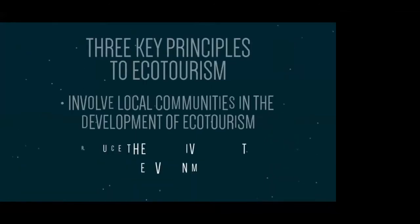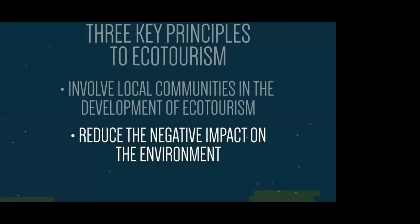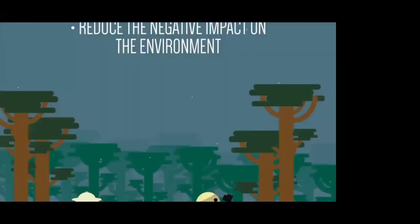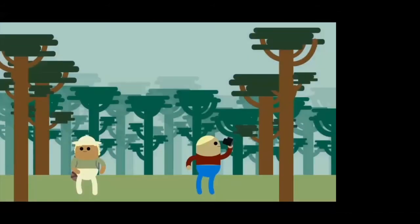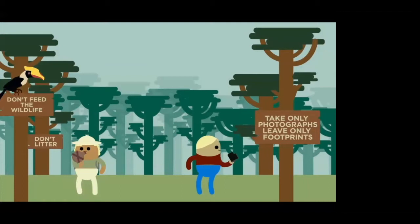The second principle is to reduce the negative impact on the environment. Ecotourism often involves visits to remote and environmentally sensitive natural areas, such as forests, dunes, or coastal areas. Visitors undertaking these trips should try to make sure that they follow any rules regarding litter and wildlife disturbance, and ensure that personal use of resources such as water is sustainable.